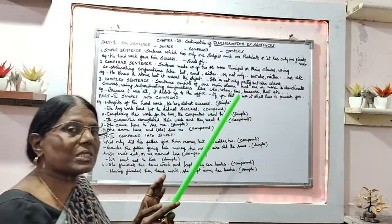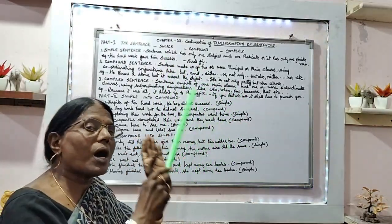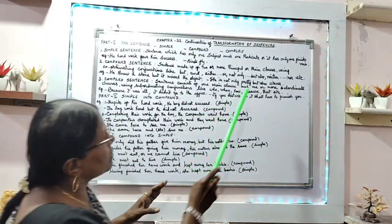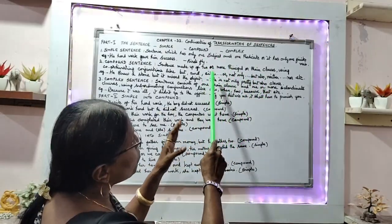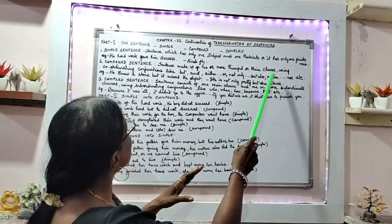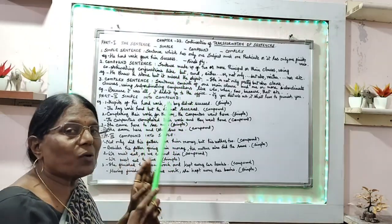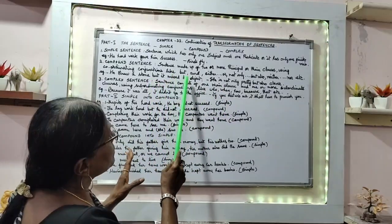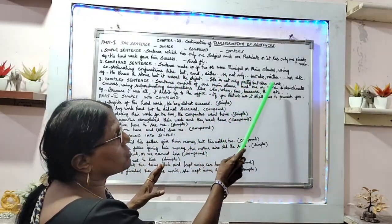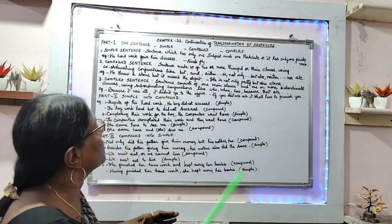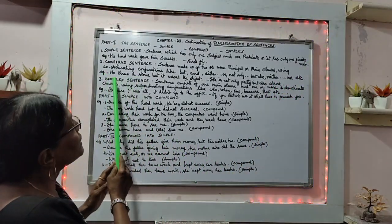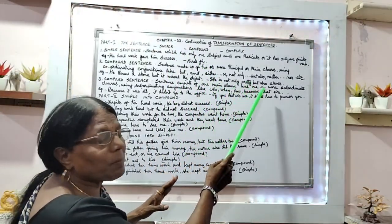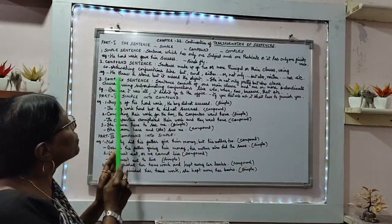Compound sentence. What is a compound sentence? A sentence made up of two or more principal clauses or main clauses, joined using coordinate conjunctions. In compound sentences, we use coordinate conjunctions to connect the sentences — like 'but,' 'and,' 'either...or,' 'not only...but also,' 'neither...nor,' etc. Example: 'He threw a stone but it missed the object.' Another: 'She is not only pretty but also clever.'